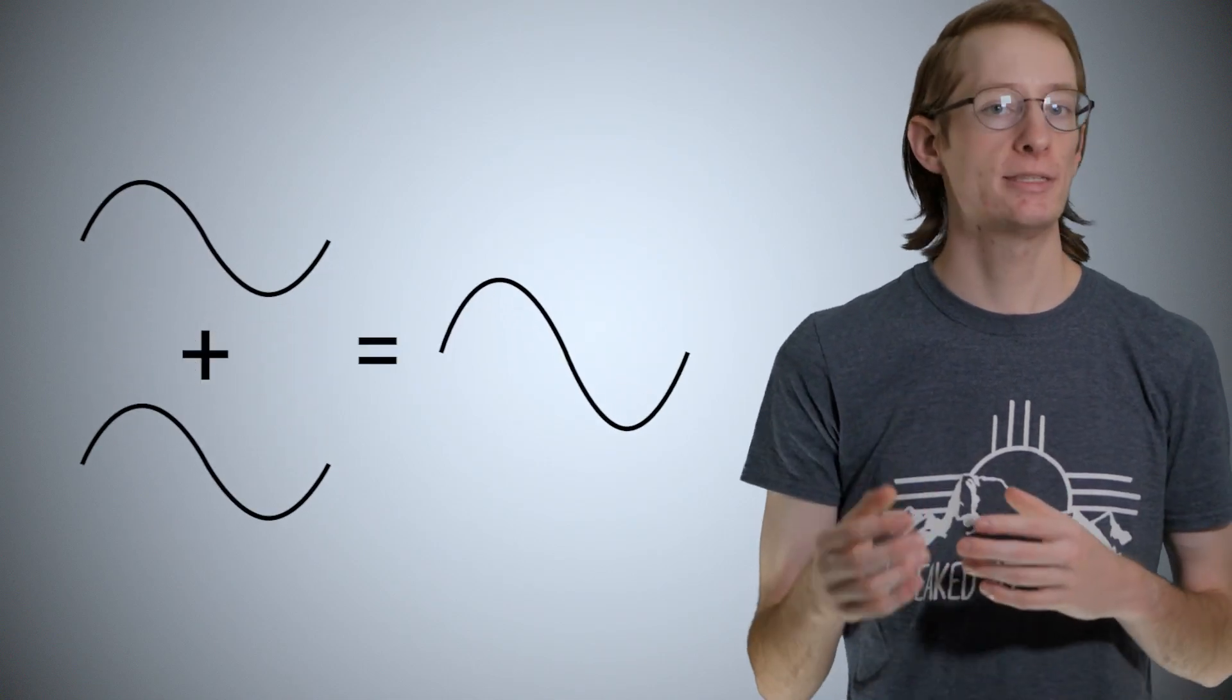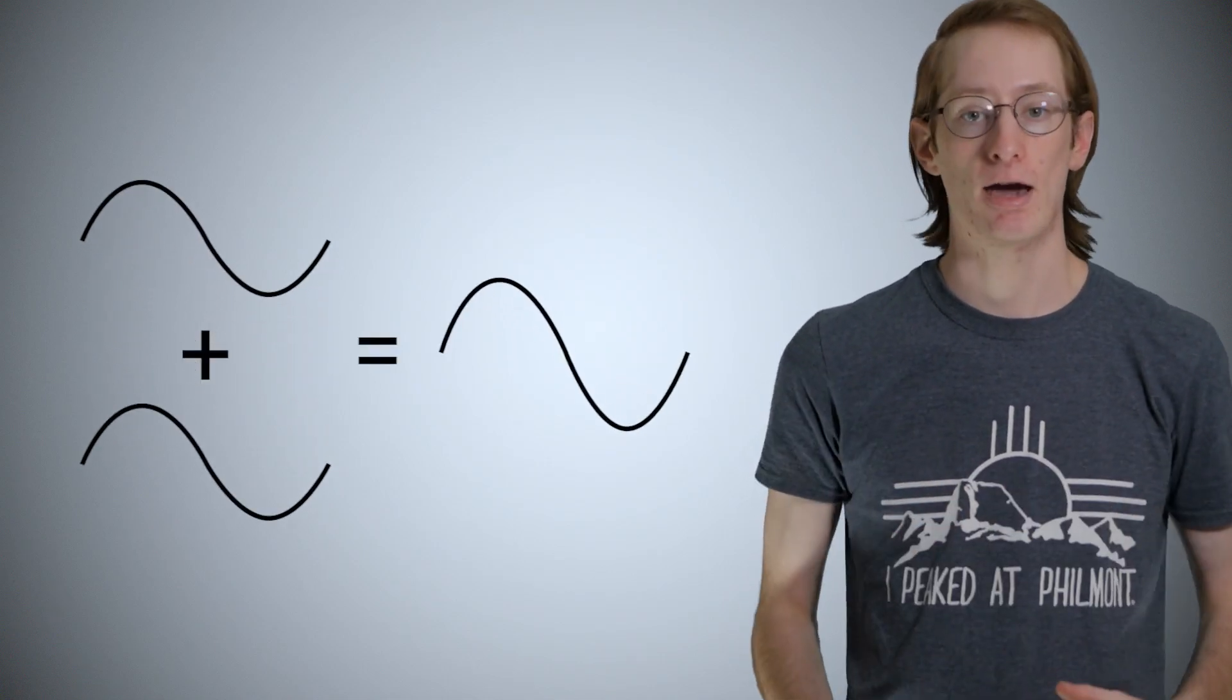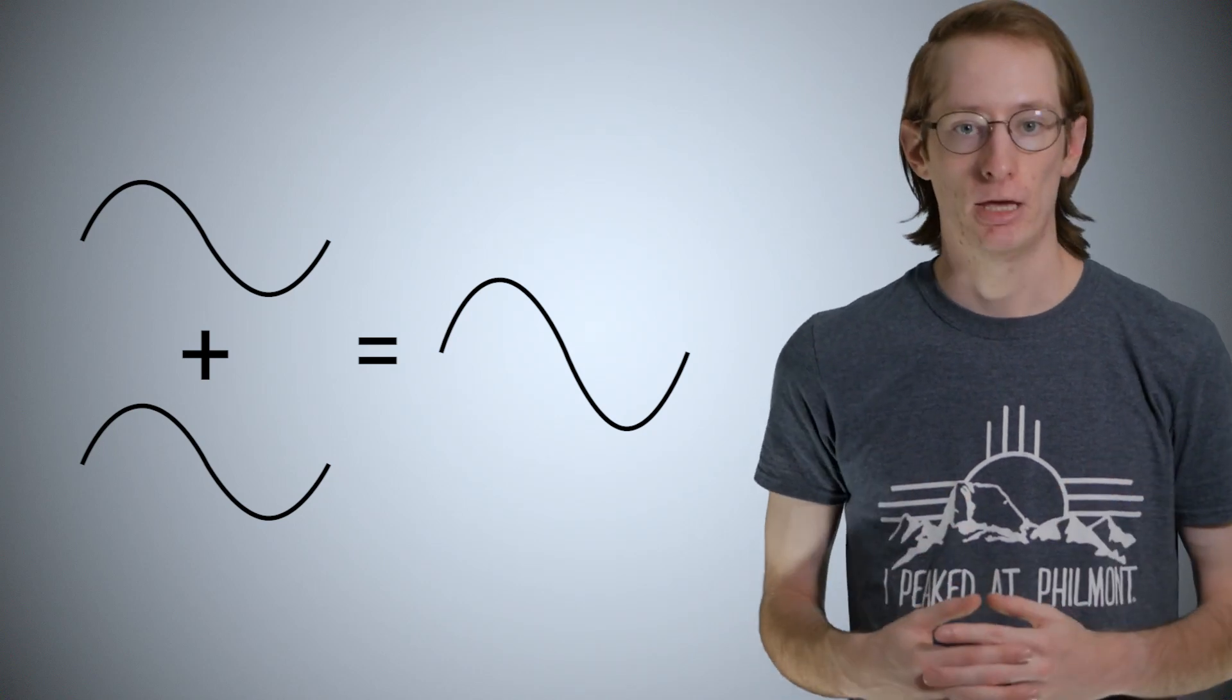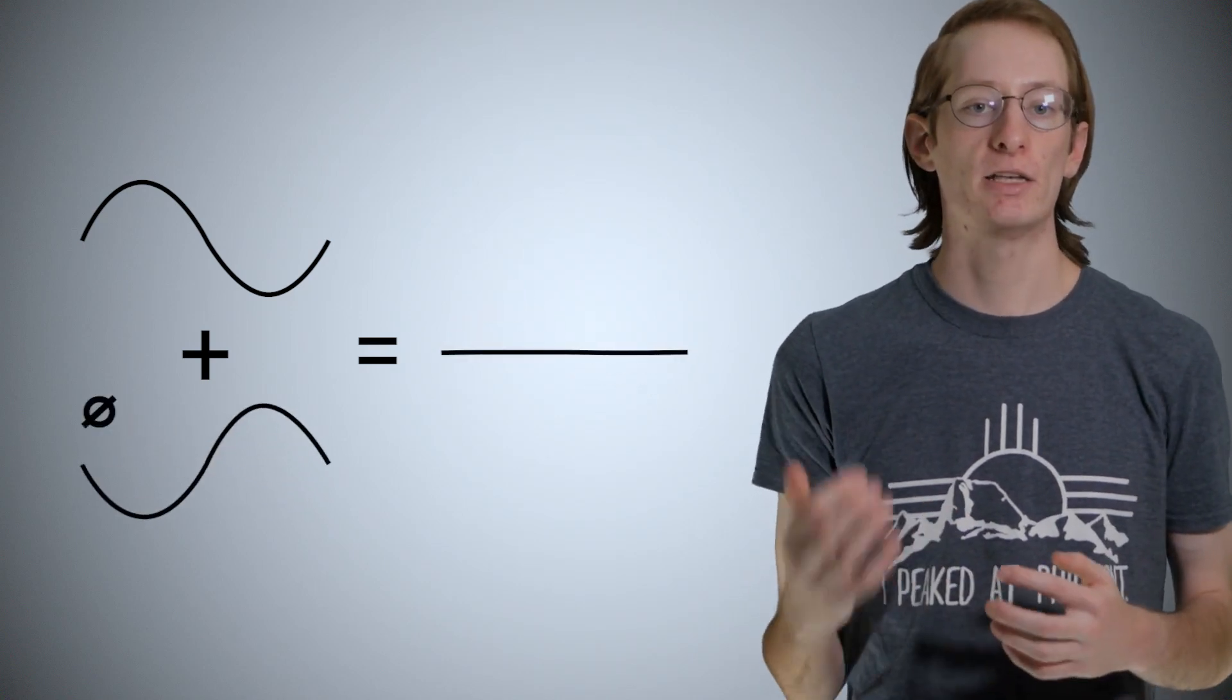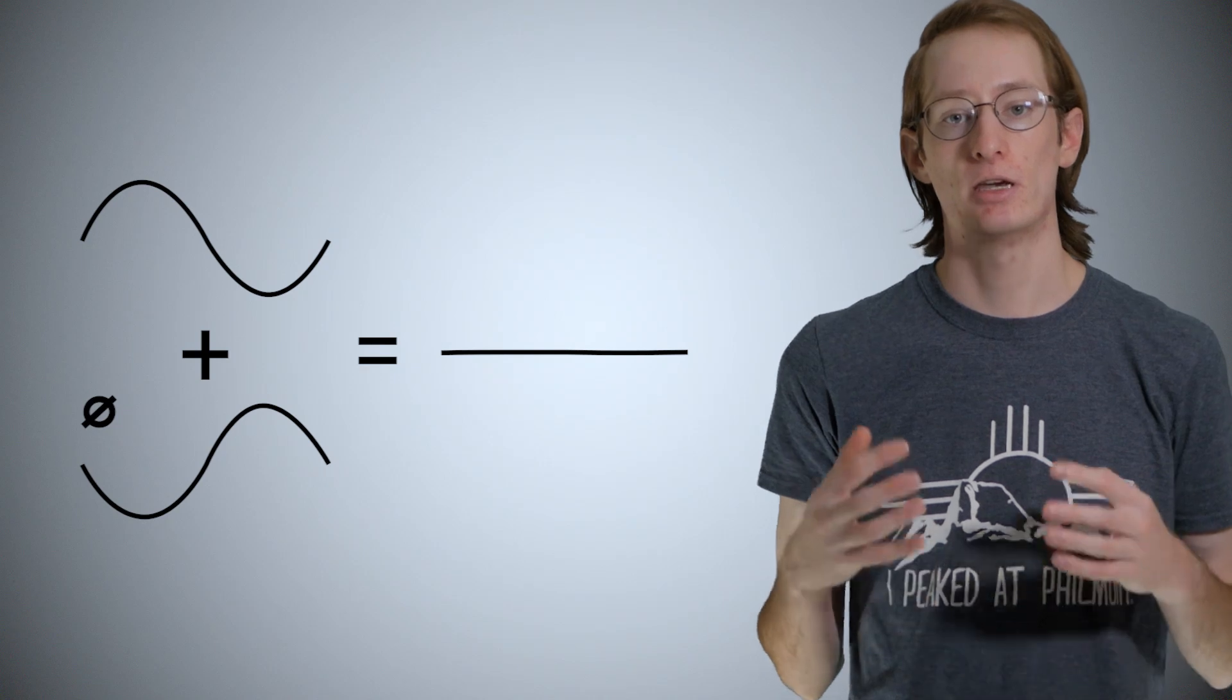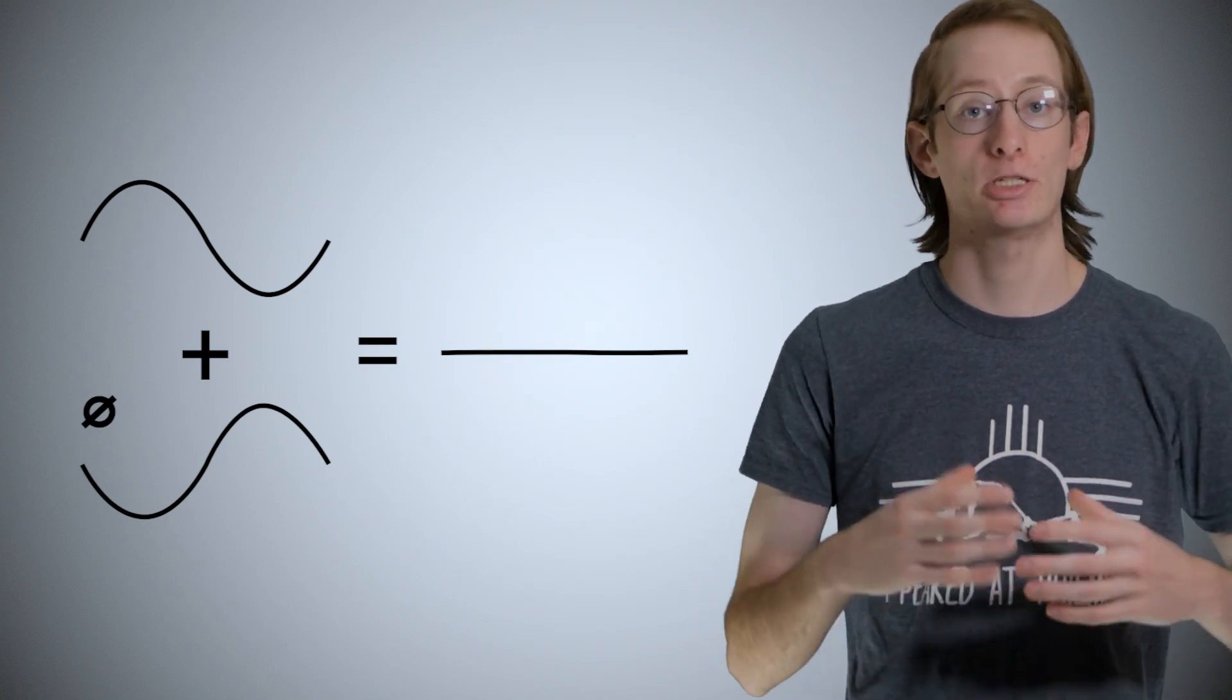Polarity is a concept that relates two identical waveforms to each other. If you take one sound and combine it with itself, it will get twice as loud or 6 dB louder. But if you invert it so that all the positive peaks are negative and vice versa, the two sounds will cancel each other out.